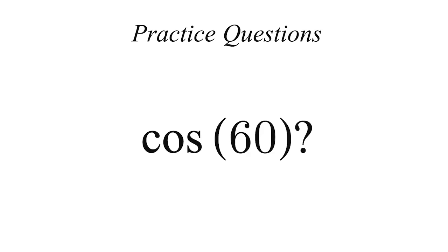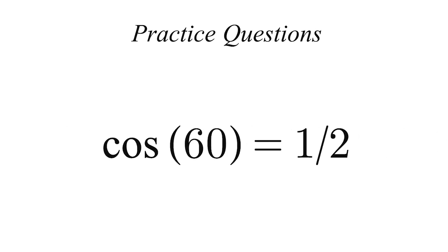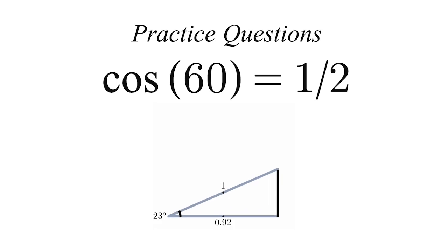What about cosine 60? If you input cos 60 into your calculator, you should get 1 over 2. This ratio is a little less visually intuitive, but the human eye isn't perfect, so sometimes it's better to rely on calculators.